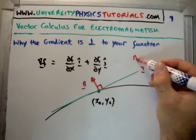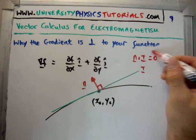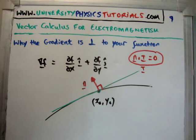That means that n dot t is equal to zero. So, if that product is zero, then they're perpendicular.